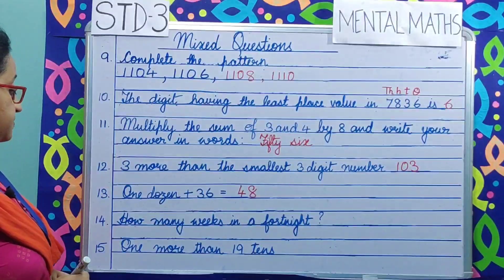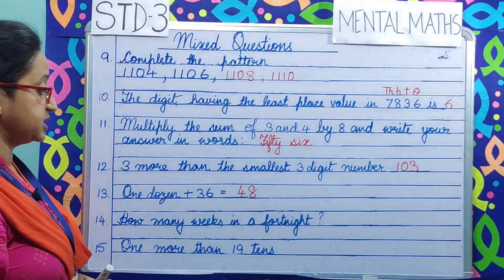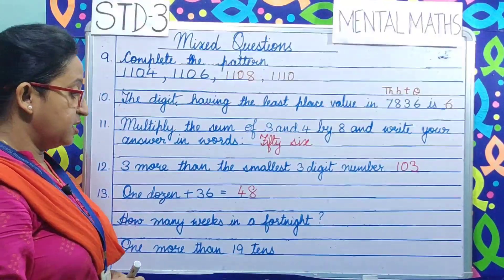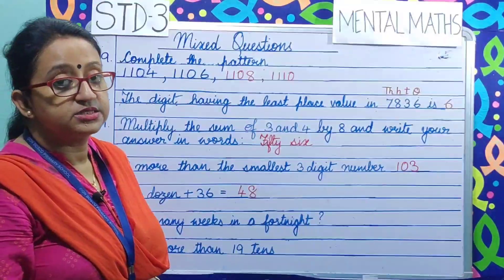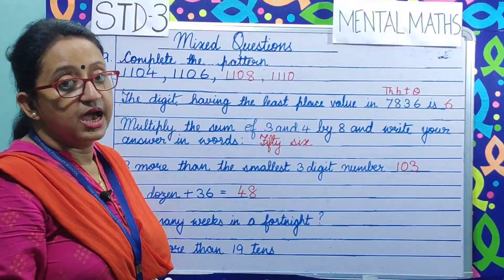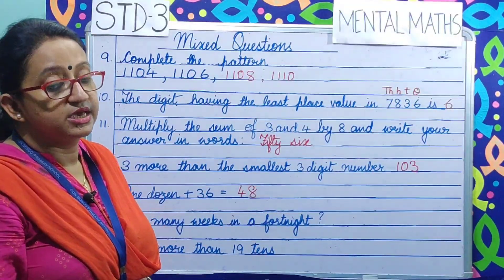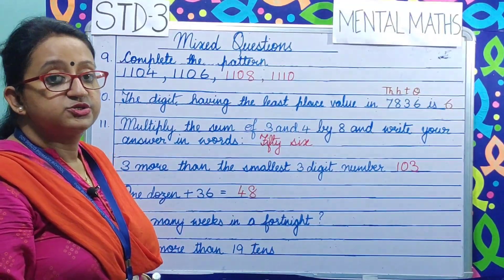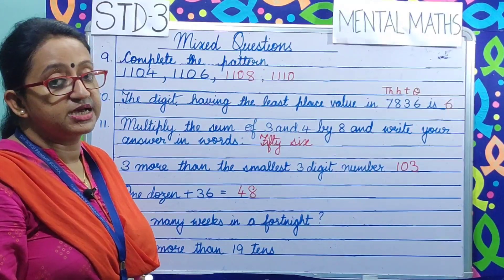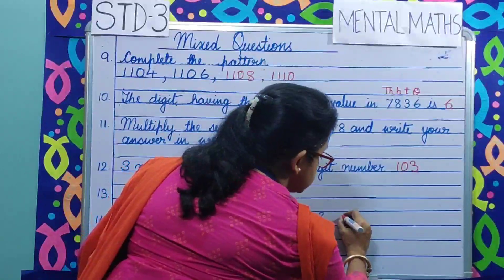Question number 14. How many weeks in a fortnight? A fortnight means 14 days, and 1 week equals 7 days. So 7 plus 7 is 14, meaning there are 2 weeks in a fortnight.